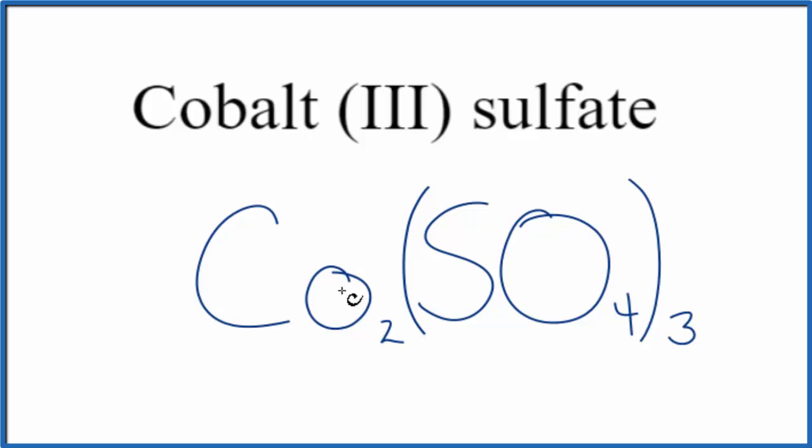But let's check our work. We said cobalt was 3+ because of this up here, and the sulfate, the whole sulfate ion, 2-. 3 times 2- that's 6-, 2 times 3+ that's 6+. These two numbers, they add up to 0. That means that this is the correct formula for cobalt III sulfate.